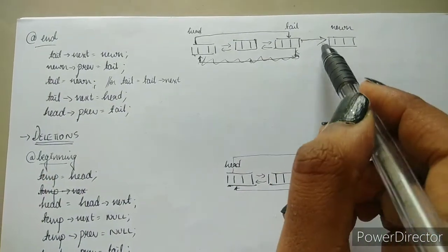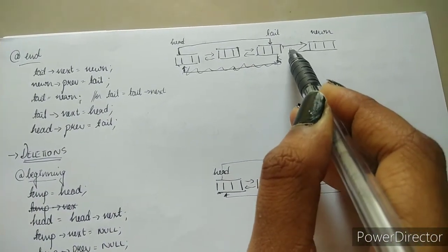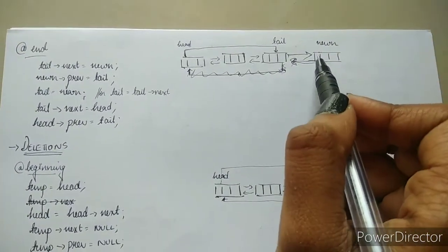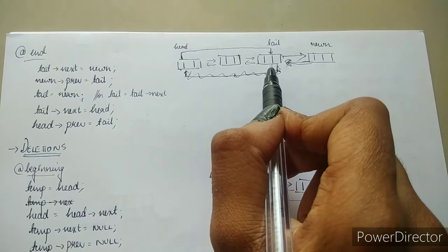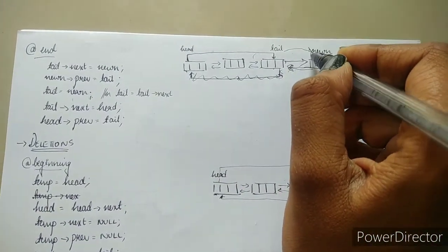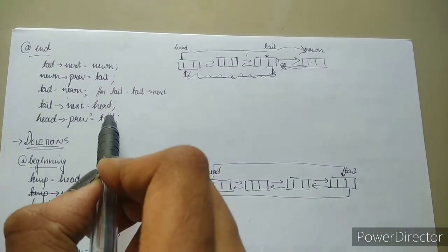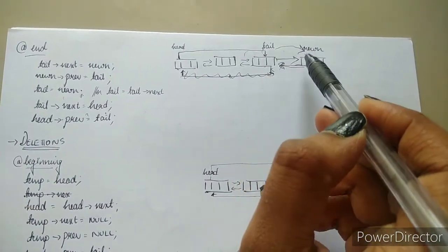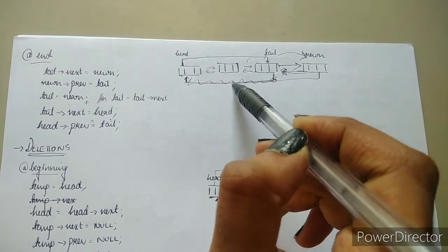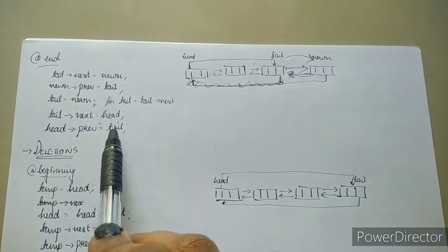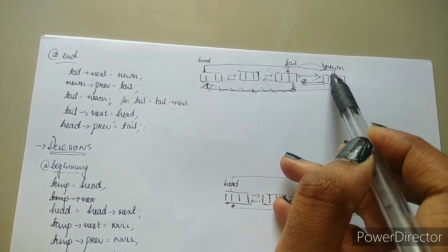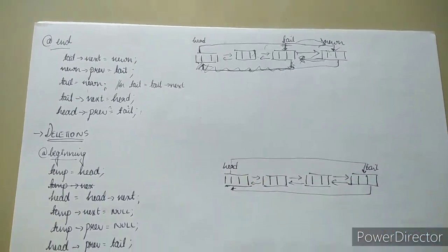Now new node's previous is tail — you form this link. Then tail's next is head, so tail's next will point to head. And head's previous is tail — head's previous will point to this new tail. The old links no longer exist and that's it for insertion at the end.